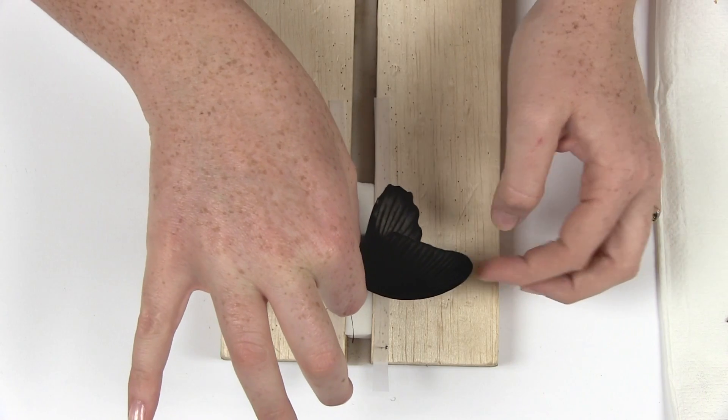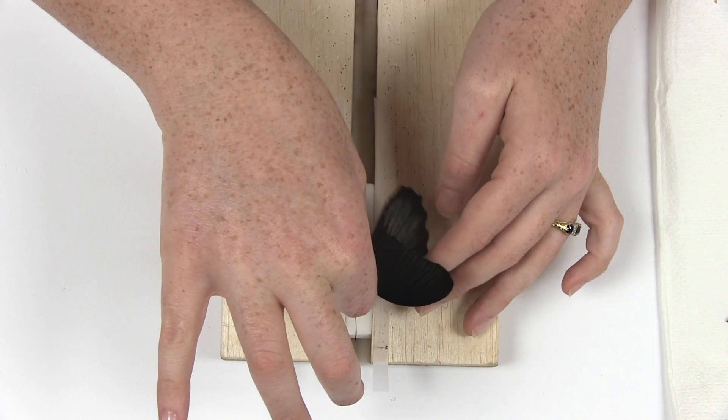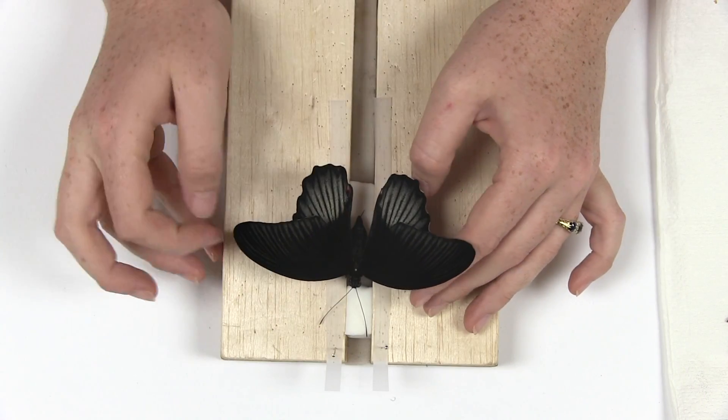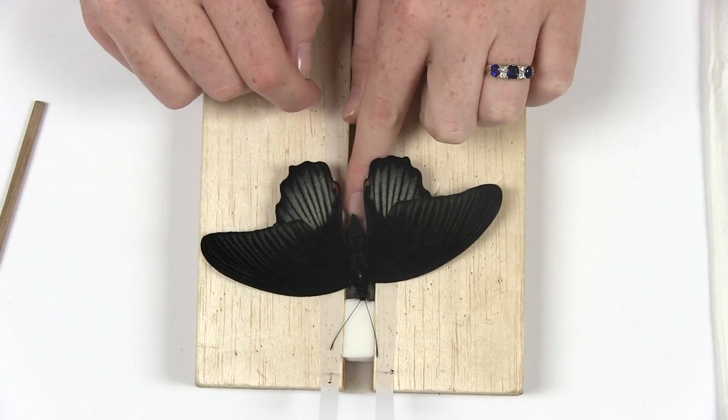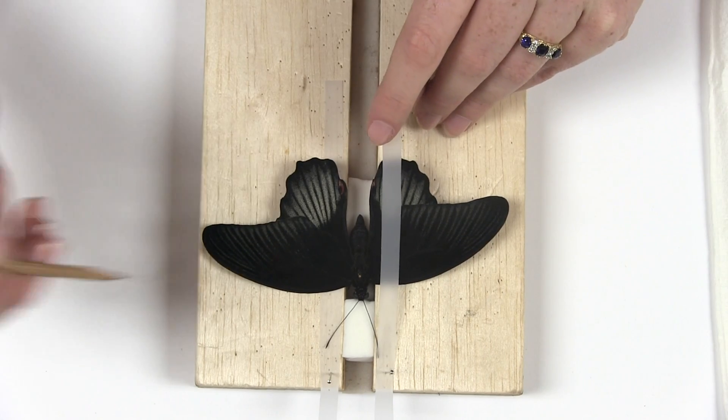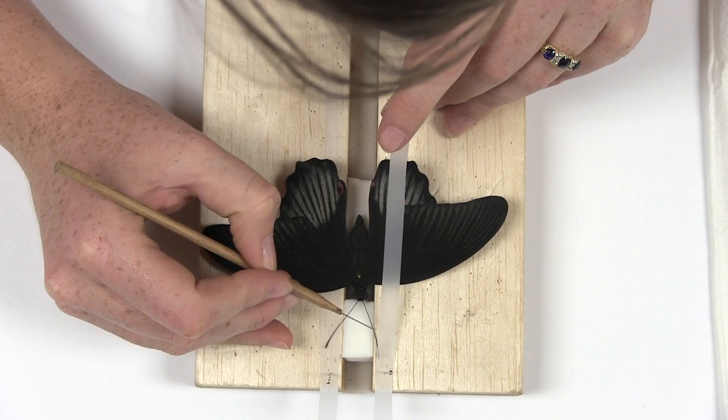Pin the butterfly in the gap of the spreading board so that the head and abdomen are supported by the foam. Use a sharp pointed instrument to position the legs, antennae, and abdomen. Make sure the antennae are on top of the paper strips.